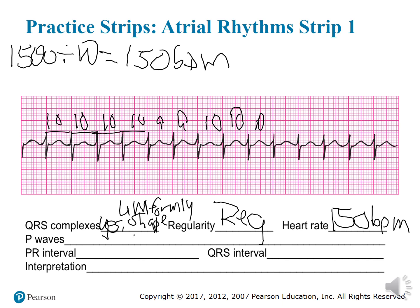We have no P waves, so we just put NP. We can't figure out the PR interval because there are no P's — so NP. Now we can figure out our QRS. Going from the start of the QRS to our J point, it looks like about two boxes. Two times 0.04 equals 0.08 seconds.